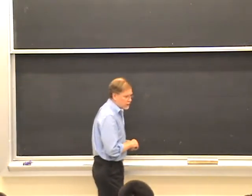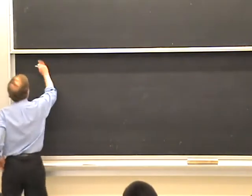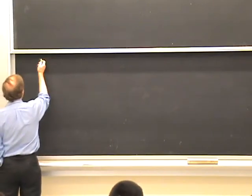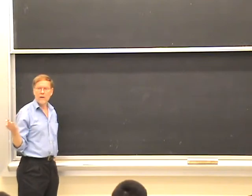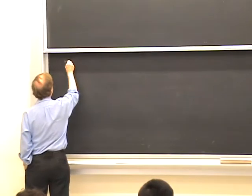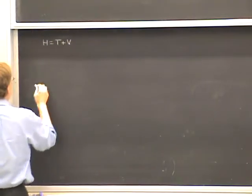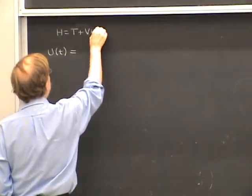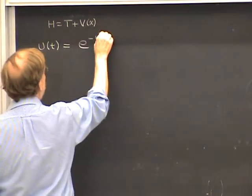The path integral concerns the propagator. The propagator is basically the matrix elements of the time evolution operator. To be specific, I'm going to make it simple and talk about just the one-dimensional problem where the Hamiltonian is kinetic plus potential: H equals T plus V. With the potential energy independent of time, the time evolution operator is e to the minus iTH over ℏ. The propagator is the X-space matrix elements of the time evolution operator.